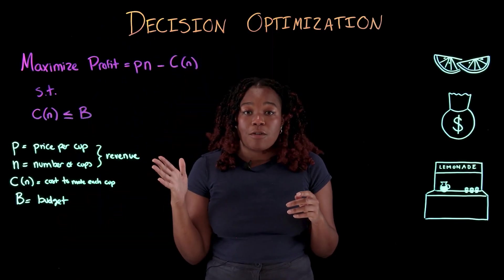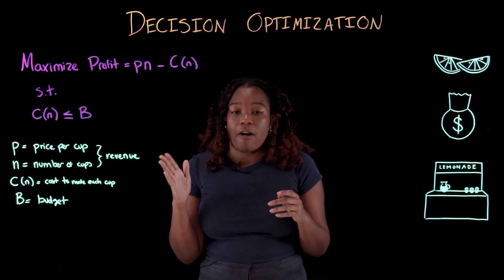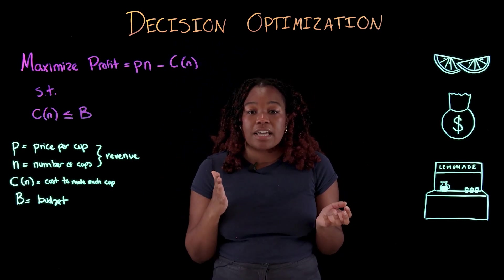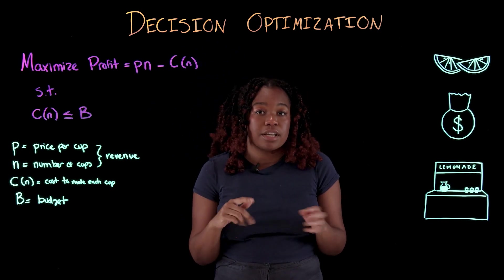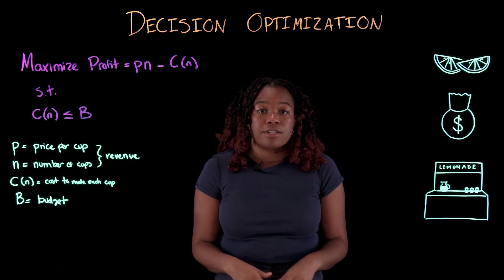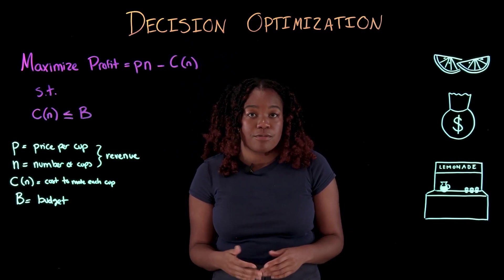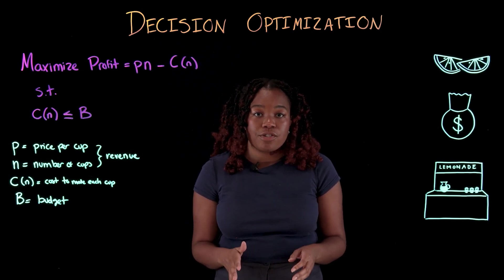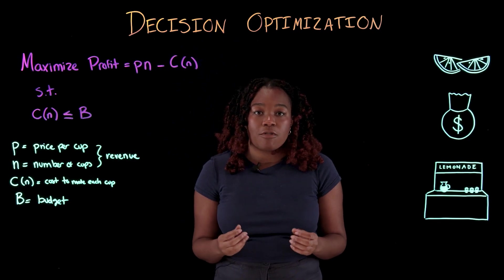To make the most amount of money, we can try different prices and quantities of lemonade to see which combinations result in the most profit, making sure we don't spend more than our budget. While we could solve a problem like this by hand, the advantage of writing it this way is that it's easier for computers to understand. There are a variety of solvers available that can solve decision optimization problems, including linear, nonlinear, and mixed integer programming. Decision optimization has important applications in supply chain management, healthcare, and finance, allowing us to quickly and easily solve business problems.